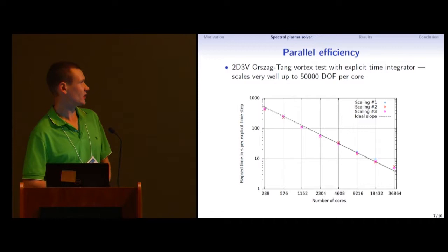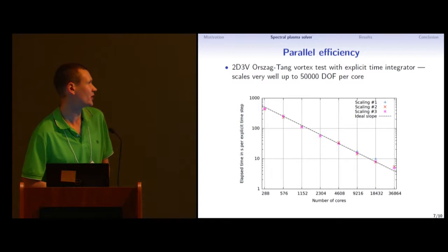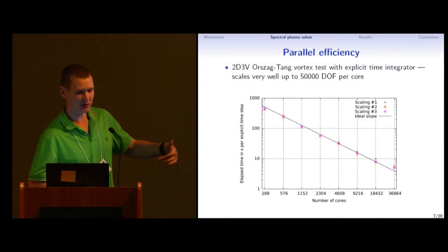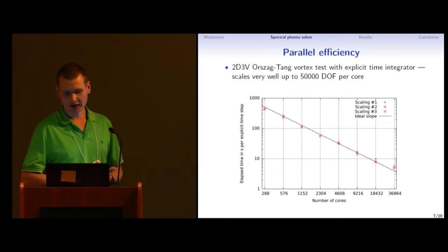So I tested the DG version on up to something 37,000 cores, and it scales pretty well. And this is 2D3V problem, which I will go on in a minute describing it. But so far, it scales pretty well.